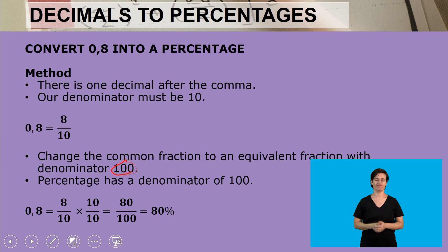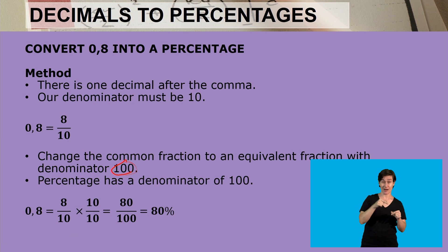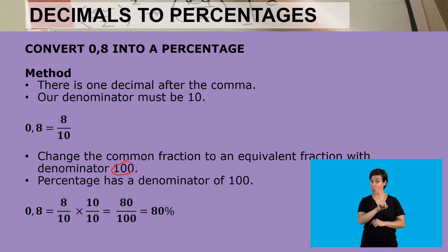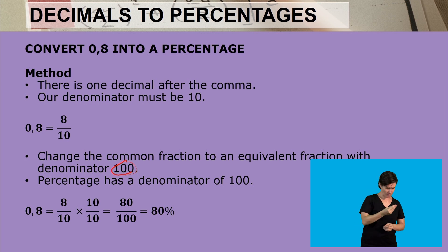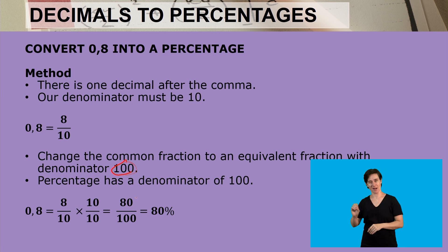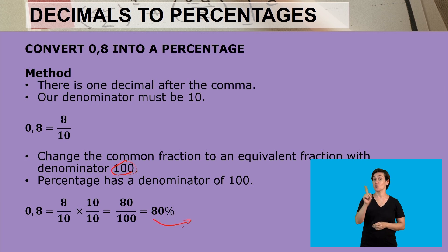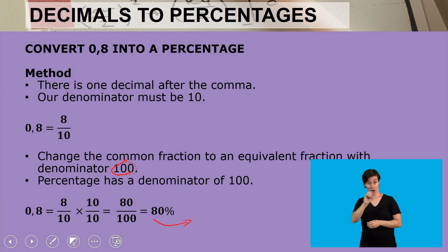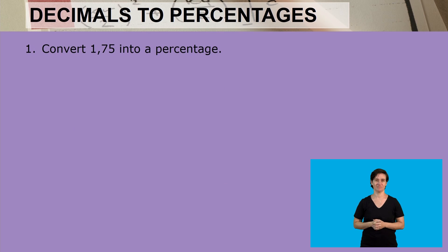So 0.8, having changed it to 8 tenths, we now multiply by 10 tenths. Remember, we multiply with a fraction that has the same denominator and numerator. And 8 multiplied by 10 becomes 80, and 10 multiplied by 10 becomes a hundred. Because it is now a hundred, that value of the numerator is our percentage. So it is 80%.